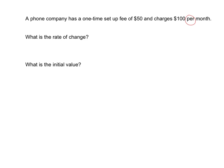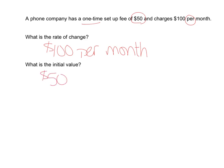$100 per month — that's the rate of change, and we'll write that with units. The initial value is what you're starting with; it's the thing that only happens one time and we don't multiply it by anything. Here we have a one-time setup fee of $50, so the initial value is $50.